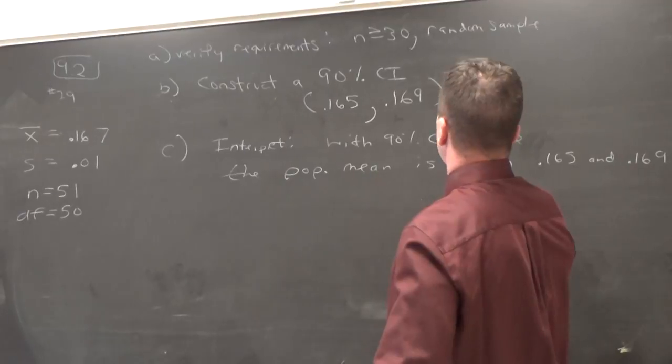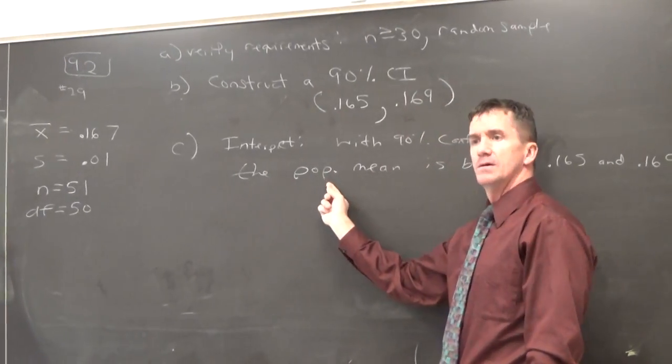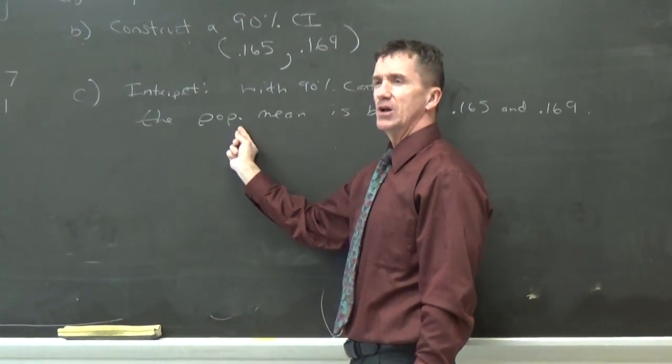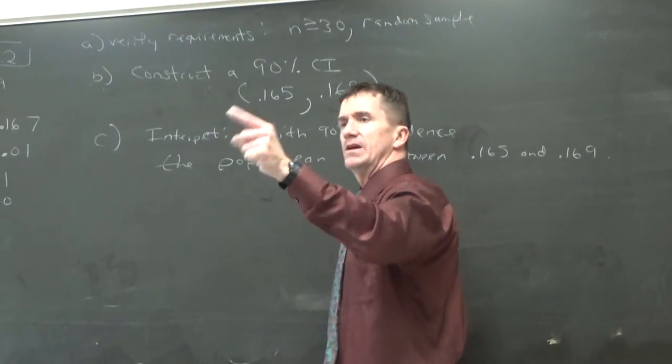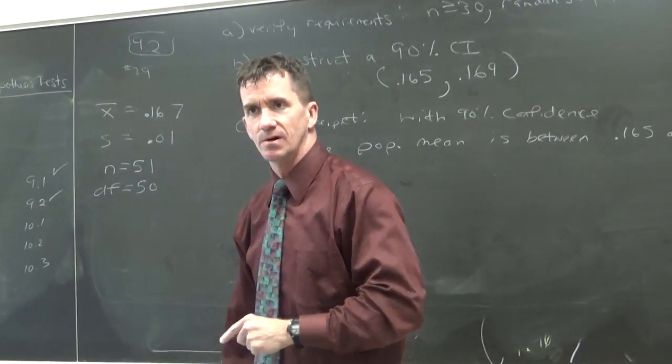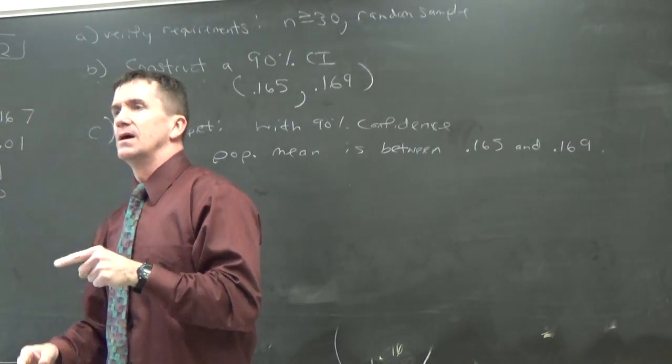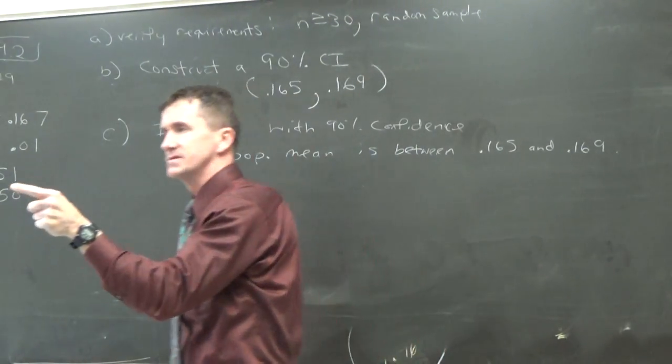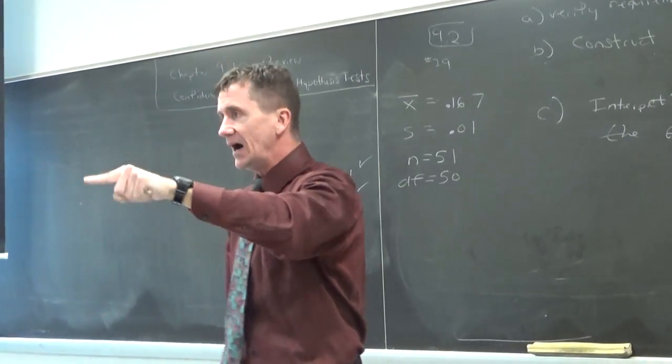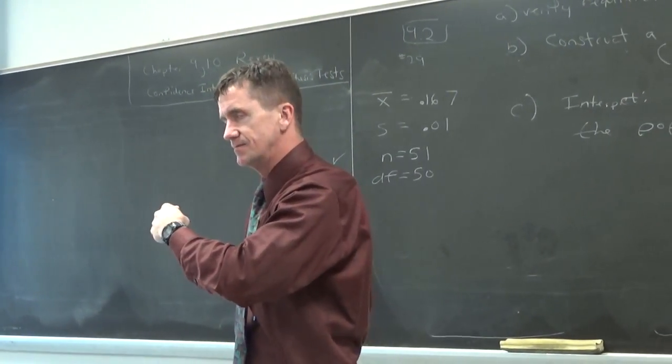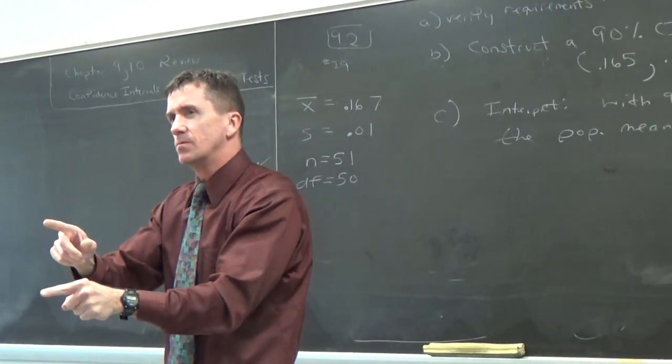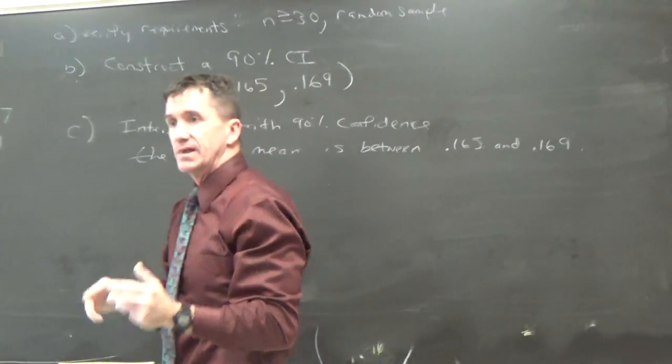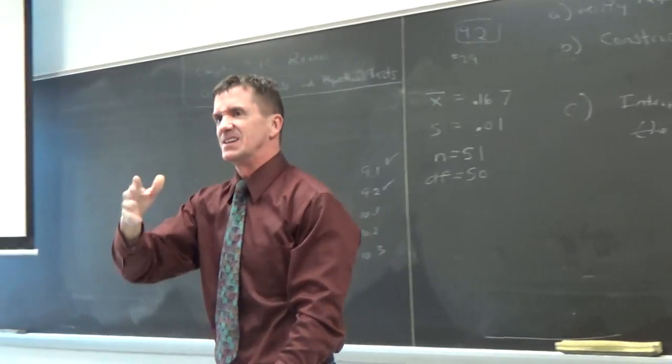But here we're good with 90 percent confidence, population mean. What's important to me is we're talking about not the sample mean, the population mean. And in the end, you go, what does this mean? What we're saying is if I took 100 more of these samples, 90 out of 100 of them would come up with an x bar between these two numbers. That's what it means. So we're really confident it's in here.